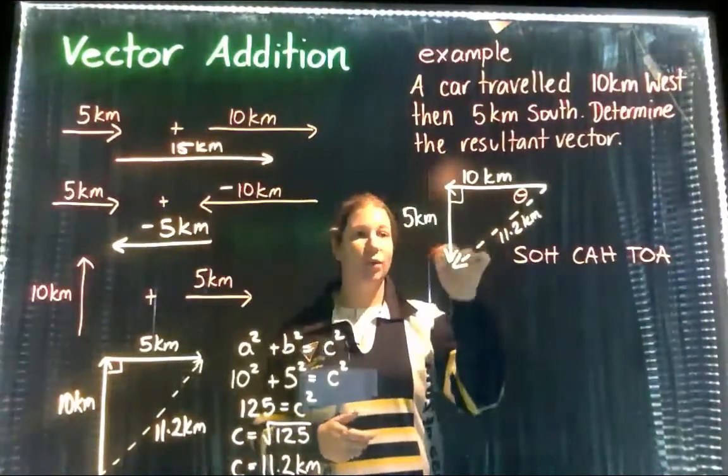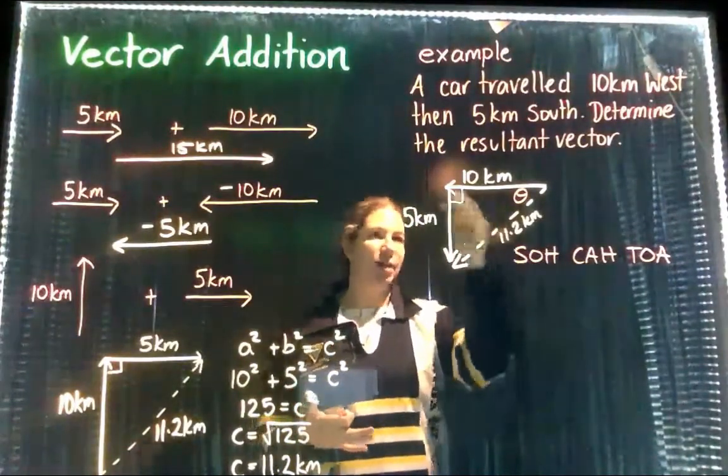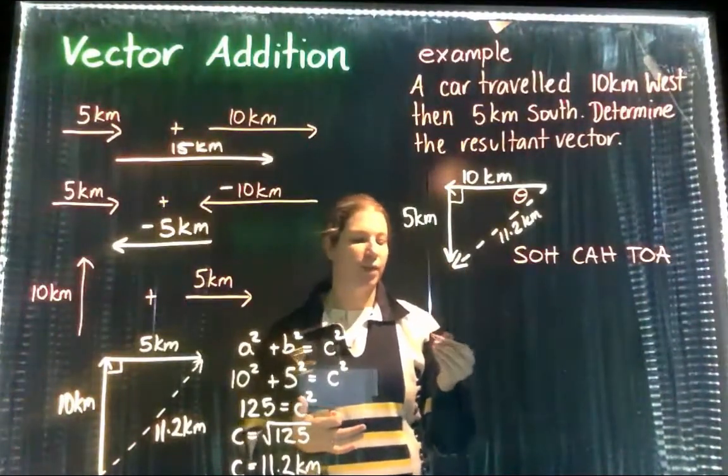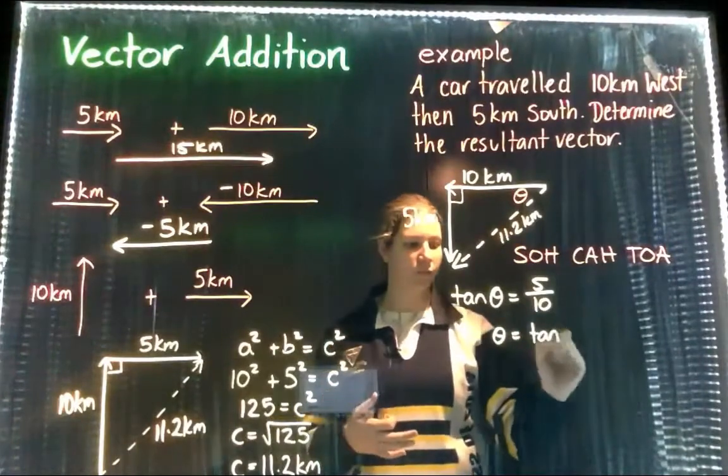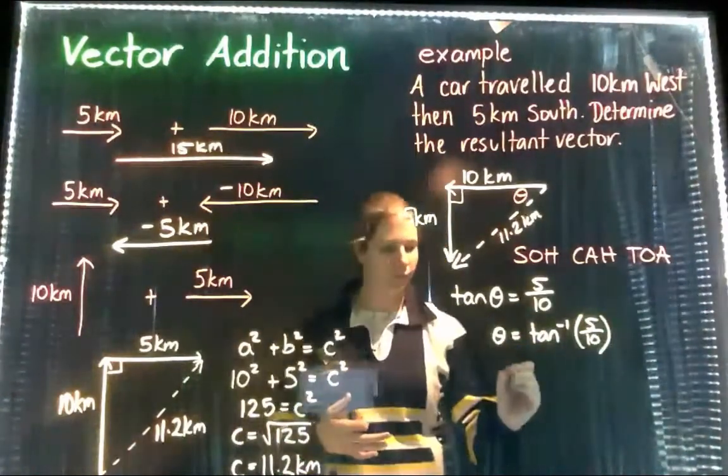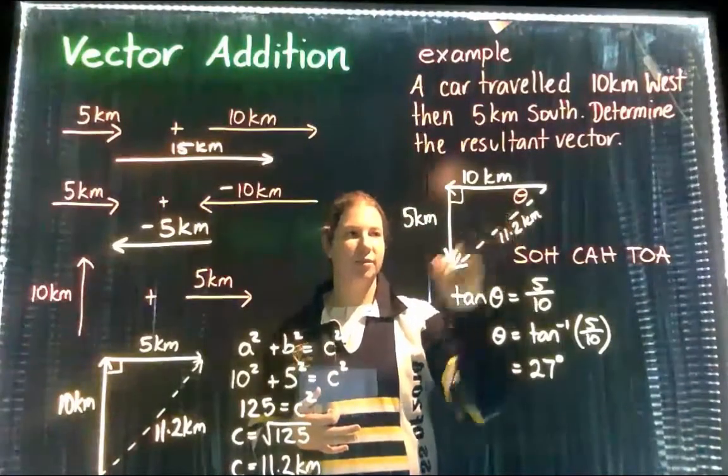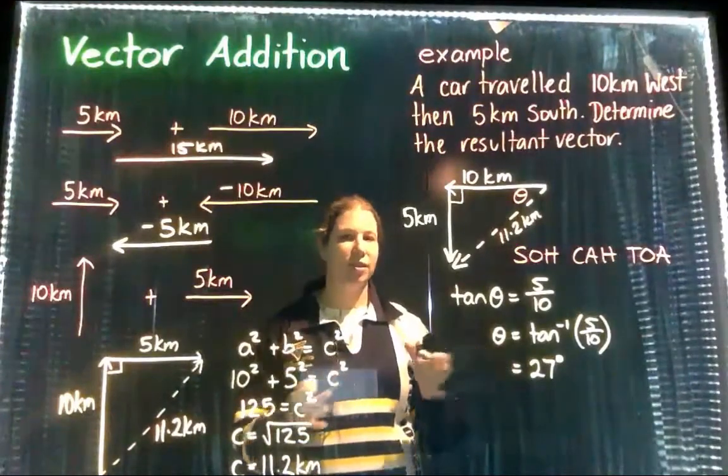Again, because we have all three measurements we could use any of the rules. I'm going to use tan again, again going back to our original values from the question. Now this angle here is 27 degrees, but that is not the resultant vector's direction.